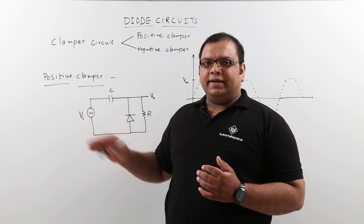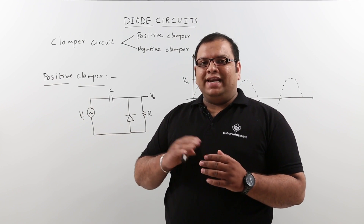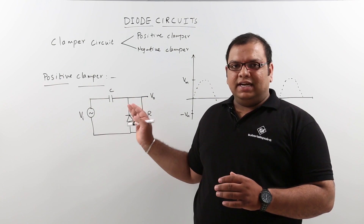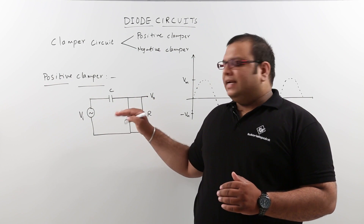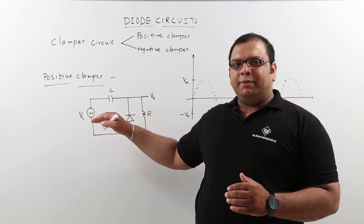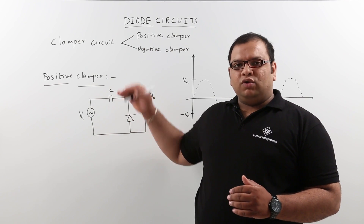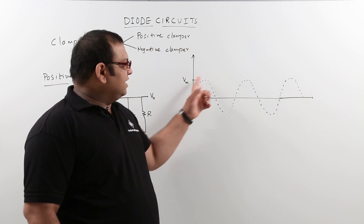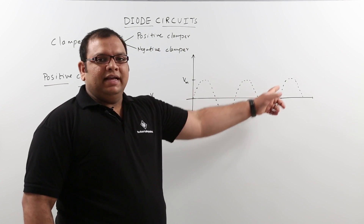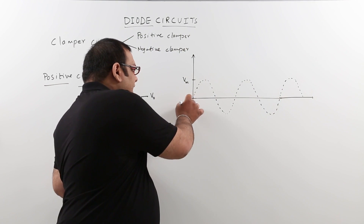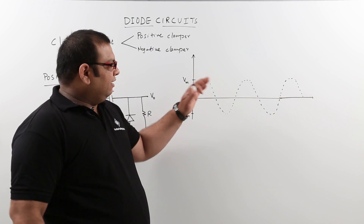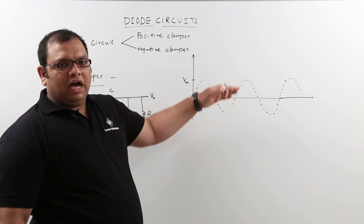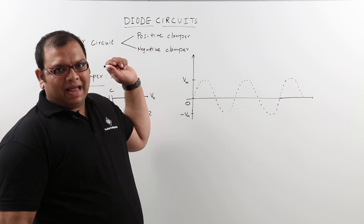When you consider the input waveform, the same input will get an output without any distortion. But the only difference is the DC value of the input waveform will be changed to the positive or negative. Normally, when you take sinusoidal waveforms, the DC value is 0. When you want to change the DC value to positive or negative, accordingly we use the clamper circuit.